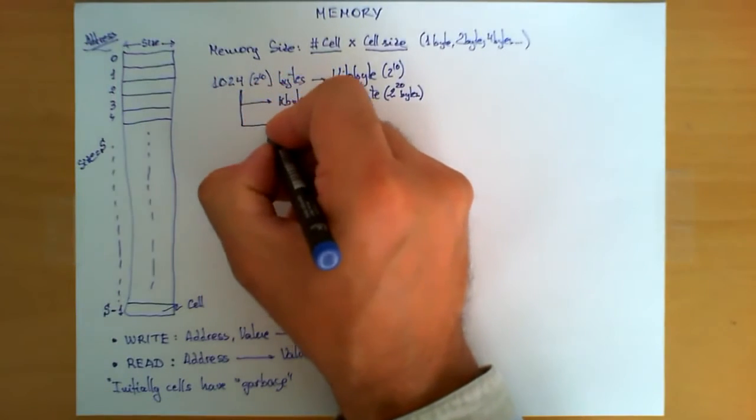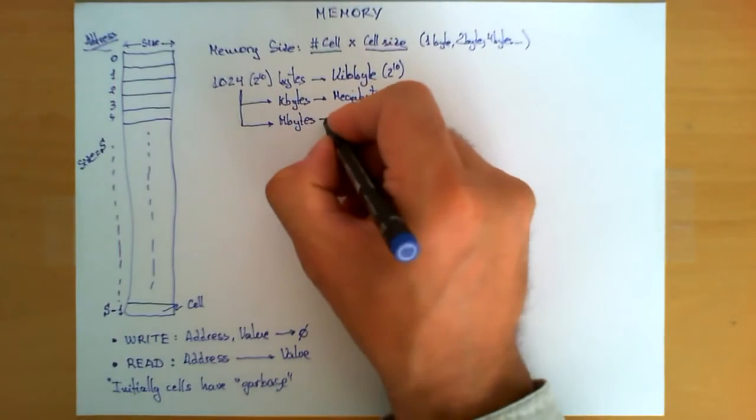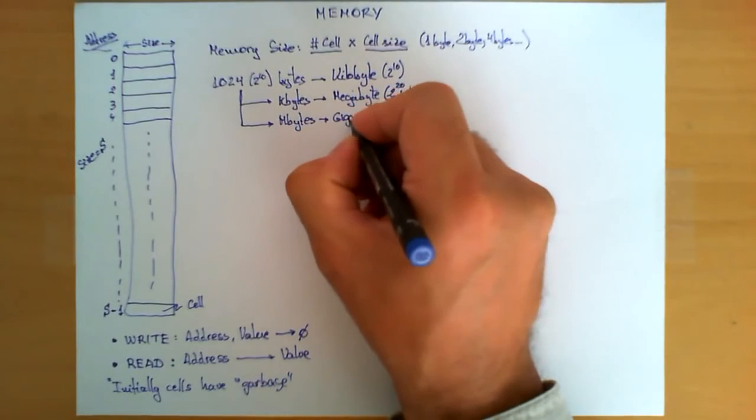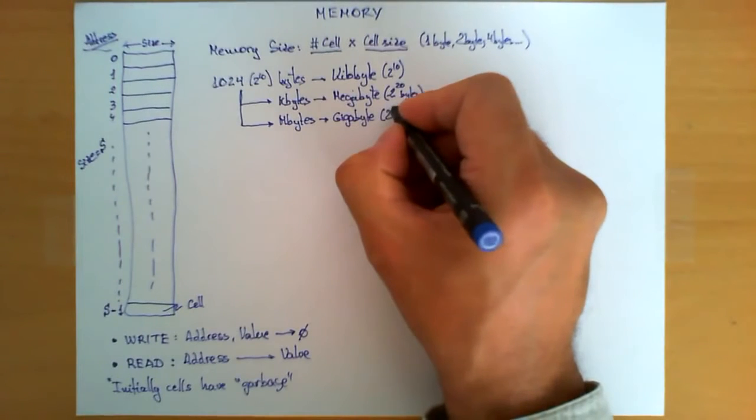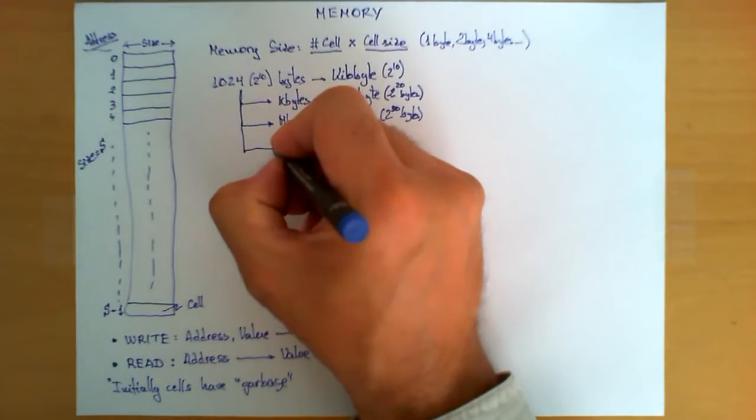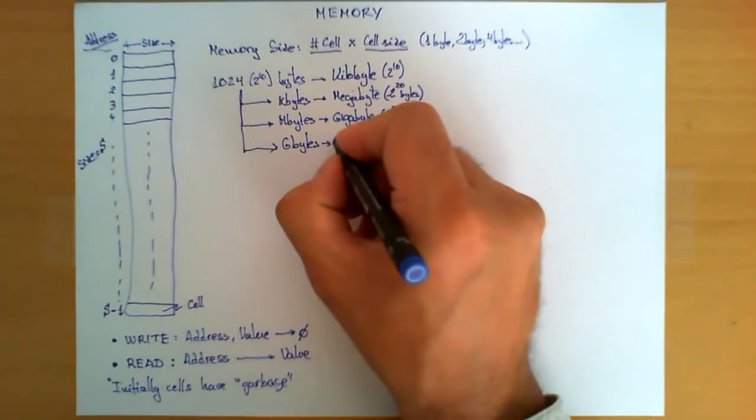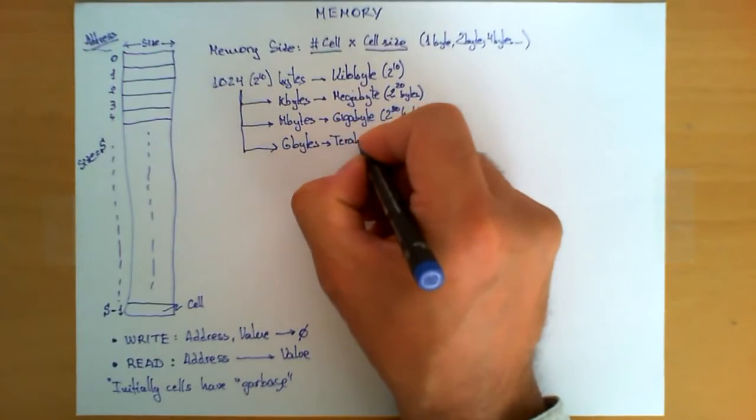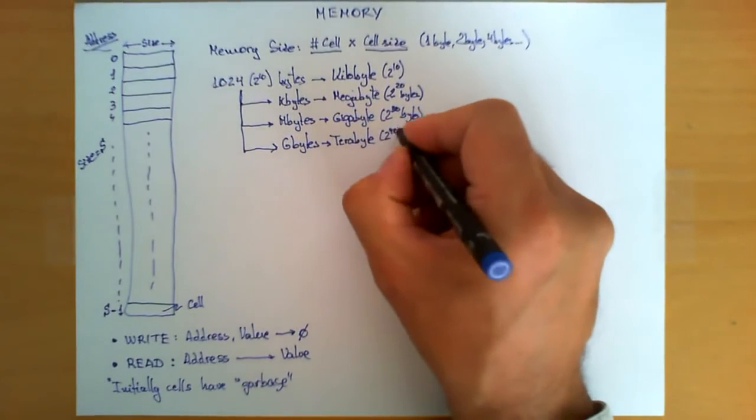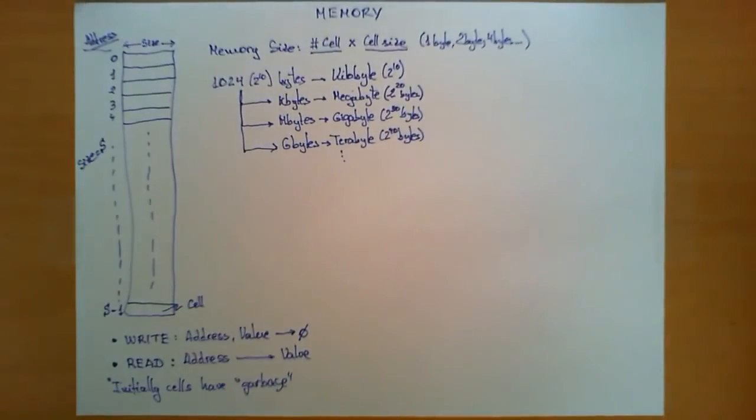If we have 1024 megabytes, that unit we call a gigabyte, and it's 2 to the 30. And again, if we have 1024 gigabytes, we have what we call a terabyte, or 2 to the 40 bytes. And so on. There are several additional prefixes that you can use to address different memory sizes.